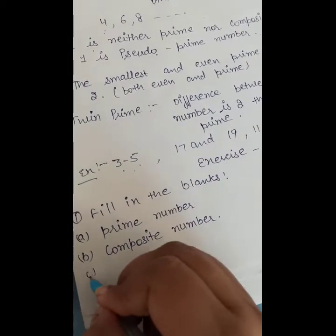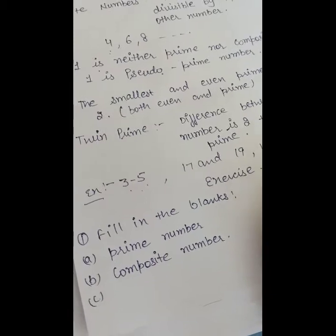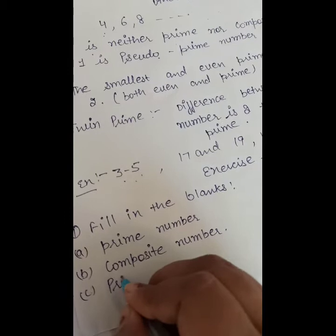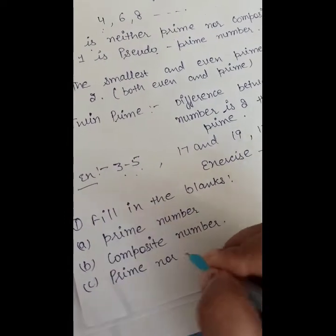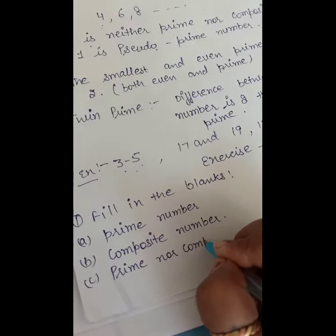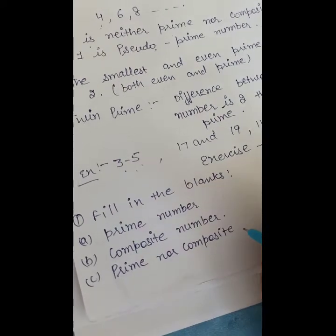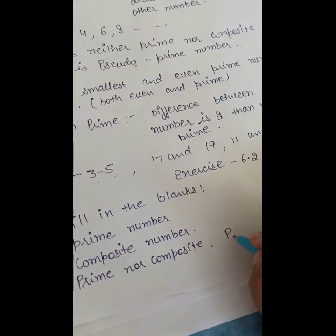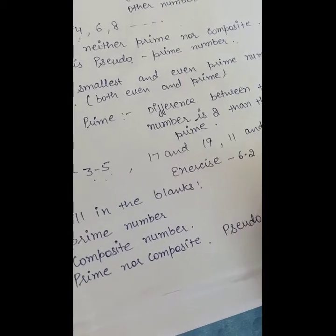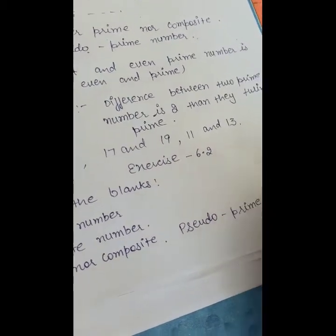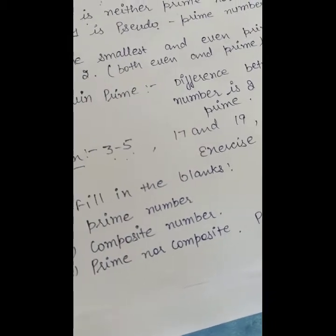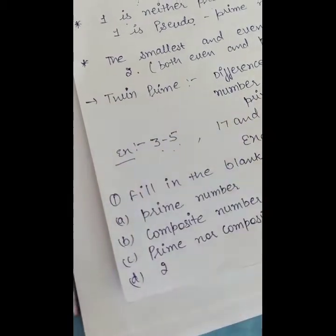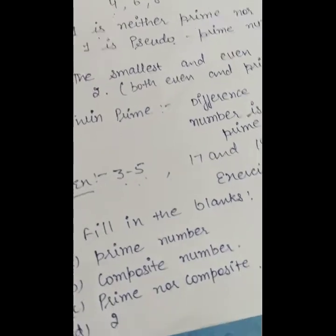The number 1 is neither prime nor composite — it is called a pseudo prime number. The smallest prime number is 2.